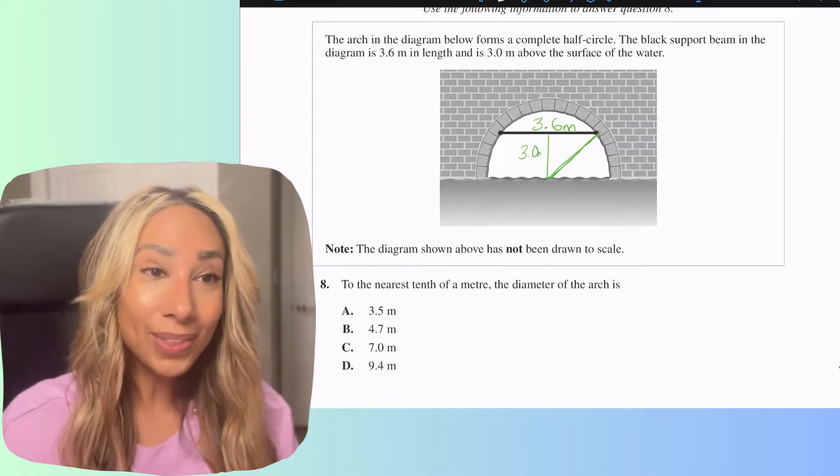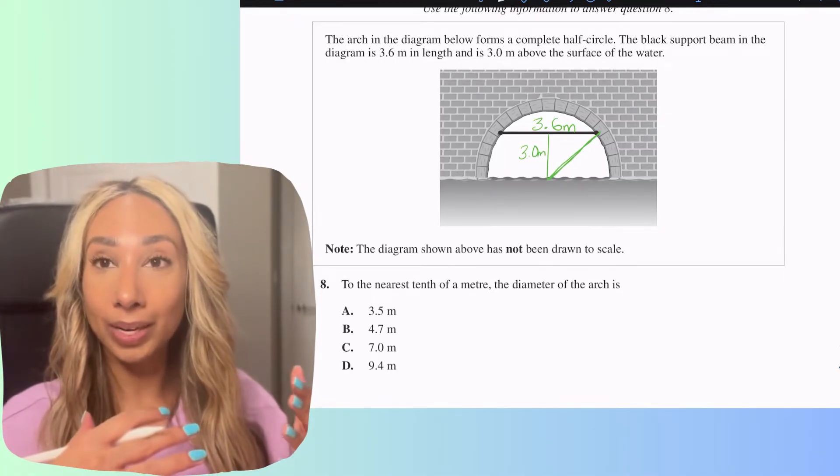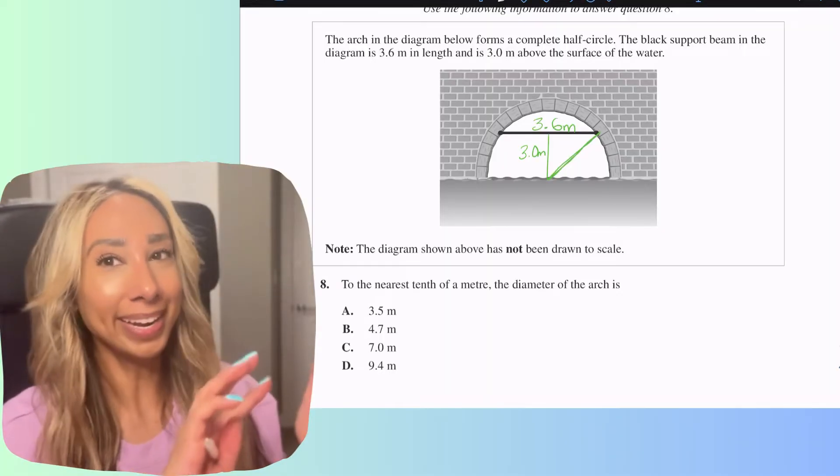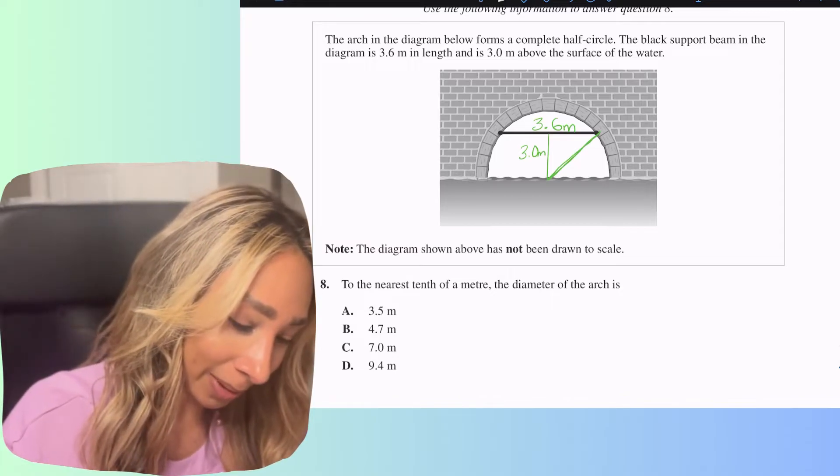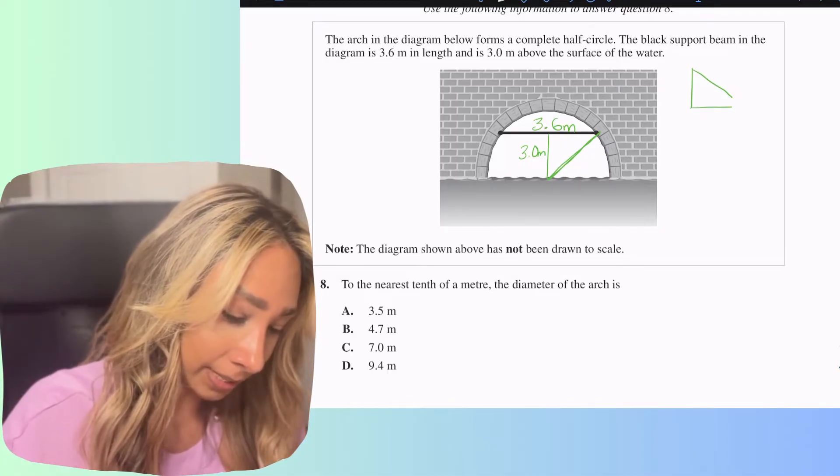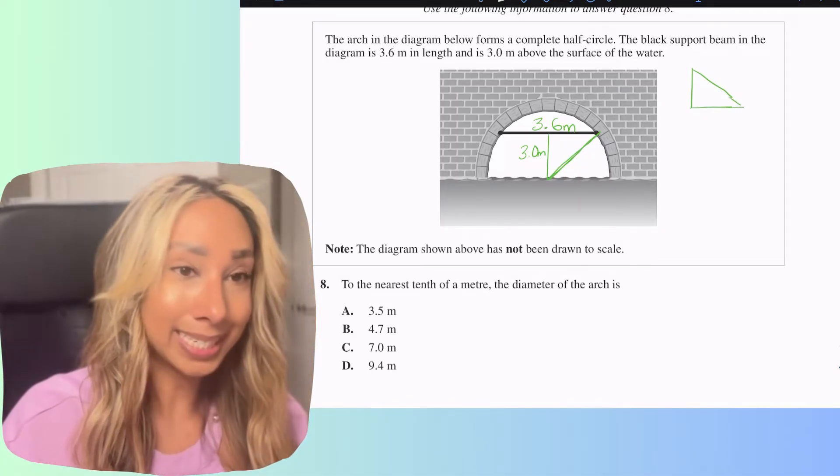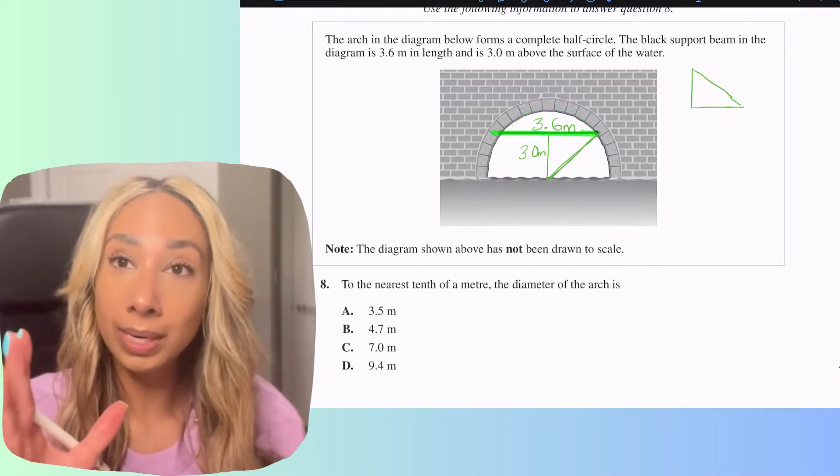So even though my triangle is upside down it is a right angle triangle meaning I can go ahead and use Pythagorean theorem. I'm actually going to flip our triangle the other way if that makes sense so it's the right way up. Truthfully it doesn't matter but I know sometimes it helps to see it like this.